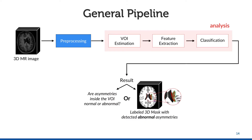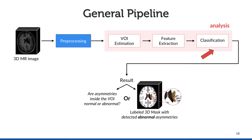Our solutions have considered the general pipeline for medical image analysis. Given a novel 3D image, we first apply some preprocessing operators, followed by the estimation of volumes of interest (VOI). We then extract features for each VOI, finally classifying them. The result will be either a label stating if the asymmetries are normal or not, or a labeled 3D mask with the detected abnormal asymmetries.